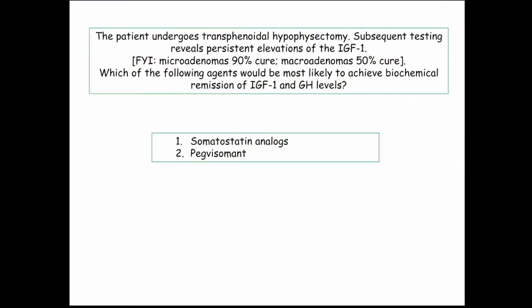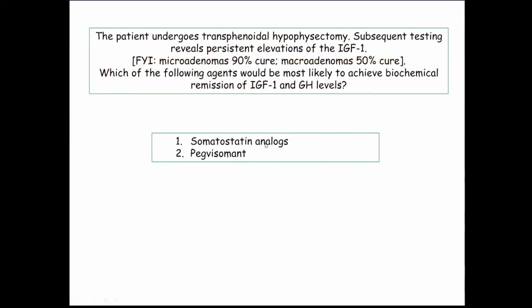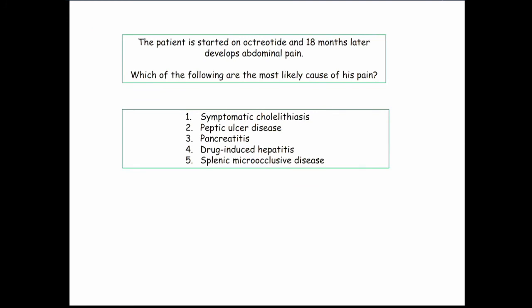This patient undergoes a transsphenoidal hypophysectomy. They take out the adenoma, but subsequent testing shows the IGF level is still elevated — remnants of the adenoma remain. Microadenoma is a 90% cure; macroadenoma is 50% cure. Somatostatin decreases growth hormone and thereby IGF. Pegvisomant is a growth hormone receptor antagonist — it can decrease IGF but won't change growth hormone levels. That's a subtle, testable distinction. We started this patient on octreotide — somatostatin.